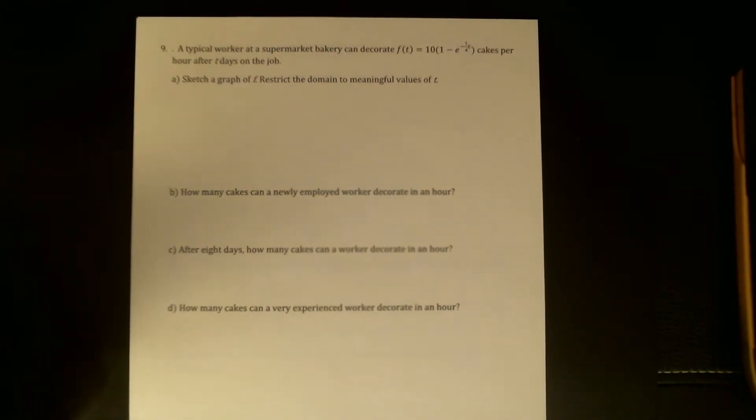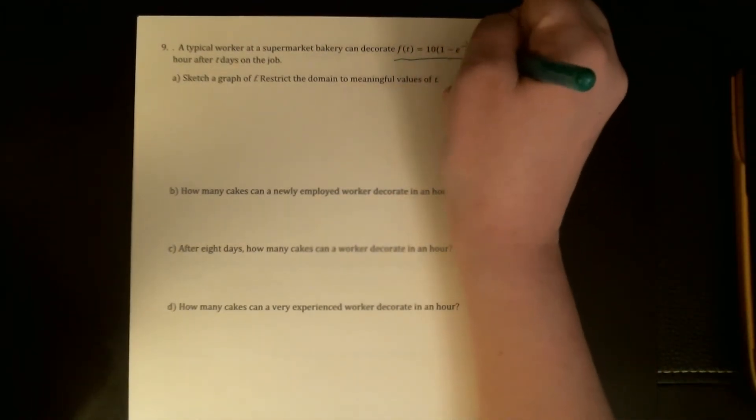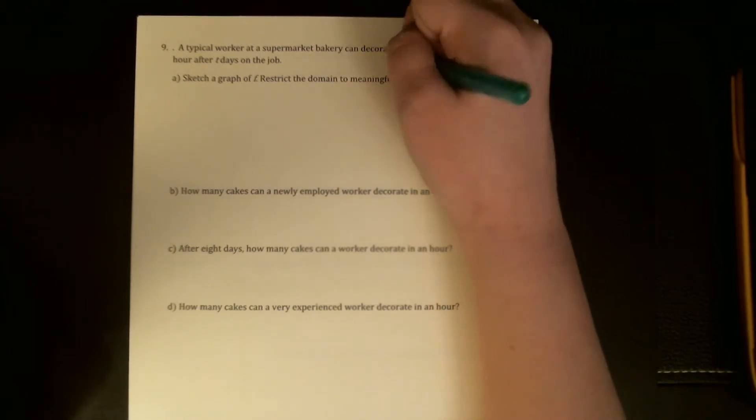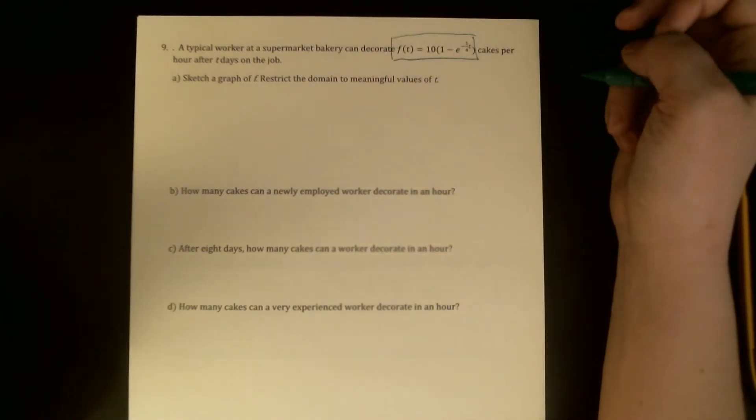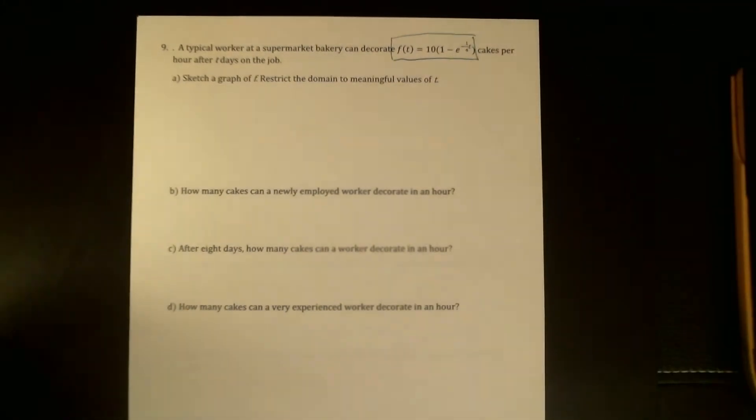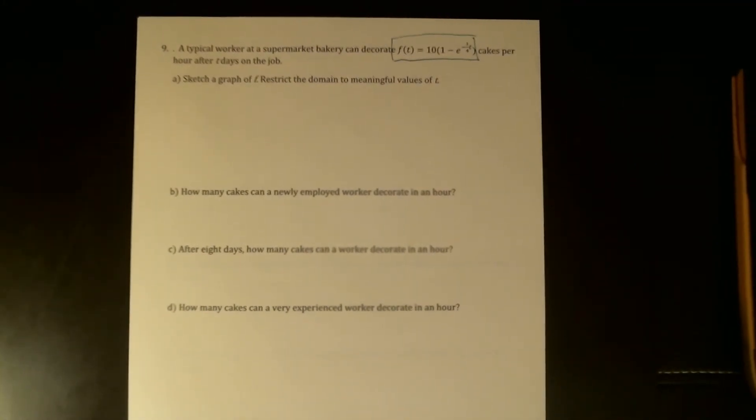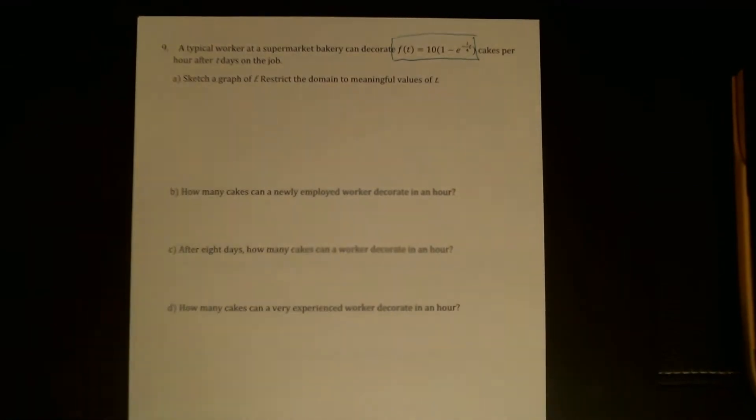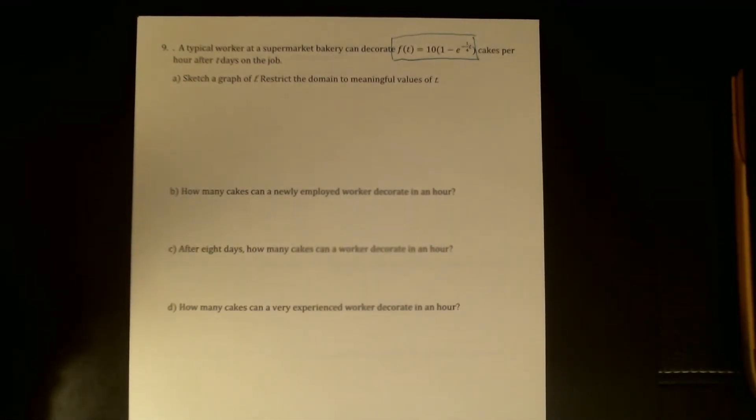So we have a formula right here: f(t) equals 10 times the quantity 1 minus e to the negative one-fourth t. And this function inputs the number of days that someone has been working in a supermarket bakery and outputs the rate at which they decorate cakes, the number of cakes per hour that they can decorate.